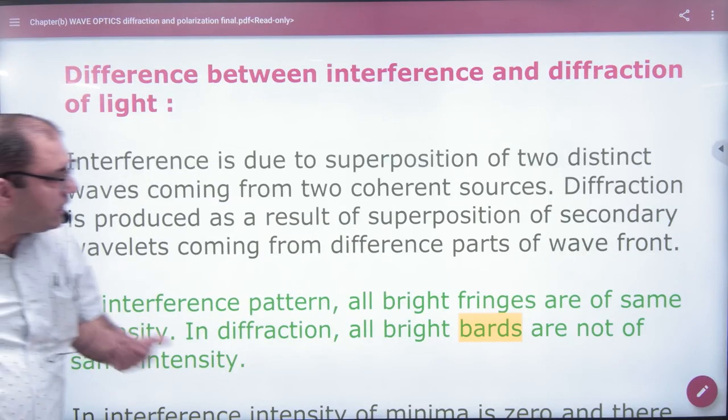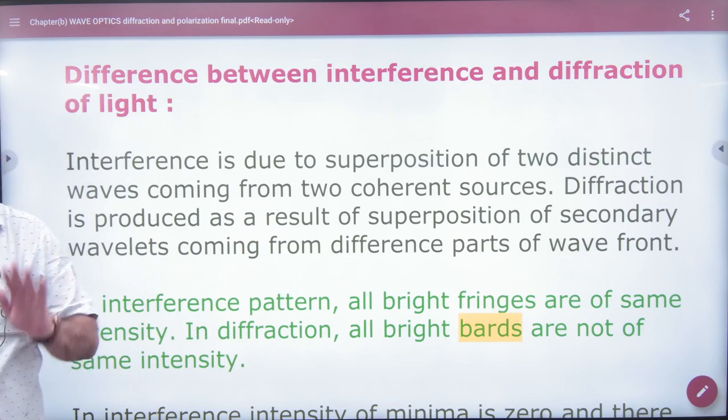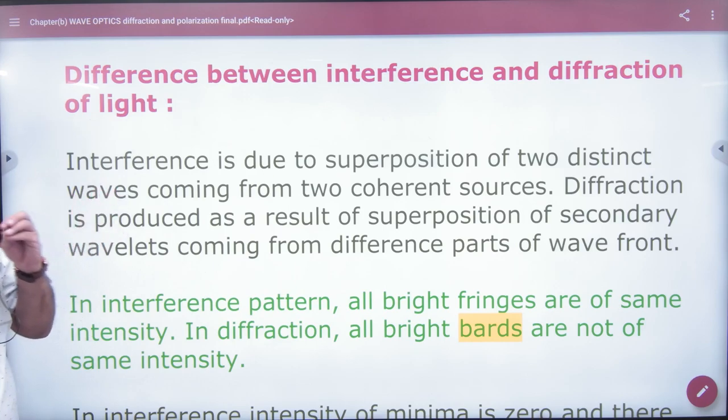Difference between interference and diffraction of light. Interference is the superposition of two distinct waves coming from two coherent sources.